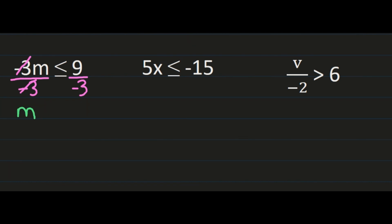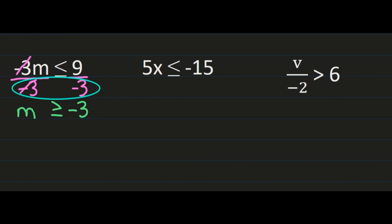On the right hand side we have 9 divided by negative 3. A positive divided by a negative is a negative, and 9 divided by 3 is 3, giving us negative 3. Because we divided both sides by negative 3, we have to flip the inequality sign. So that inequality sign is now a greater than or equal sign, and our answer is m is greater than or equal to negative 3.